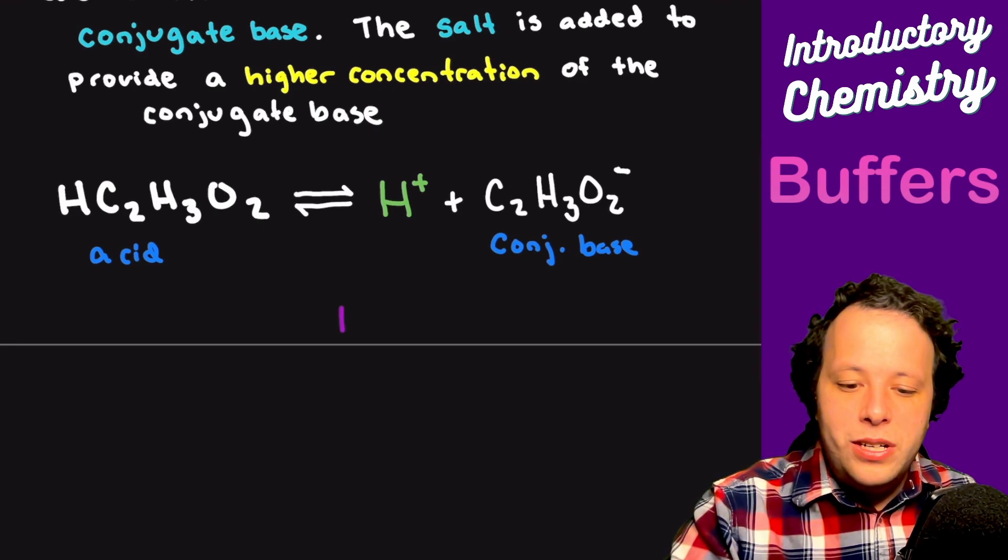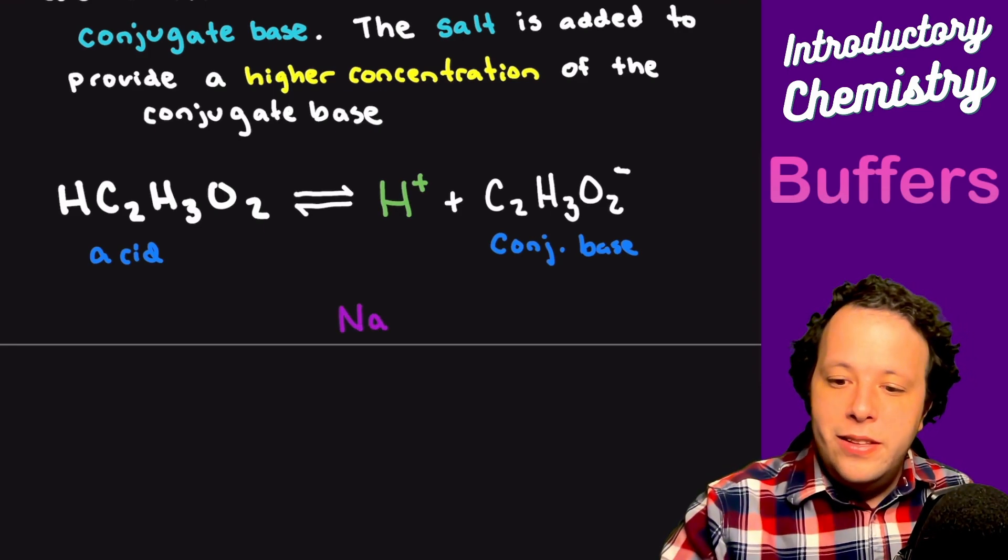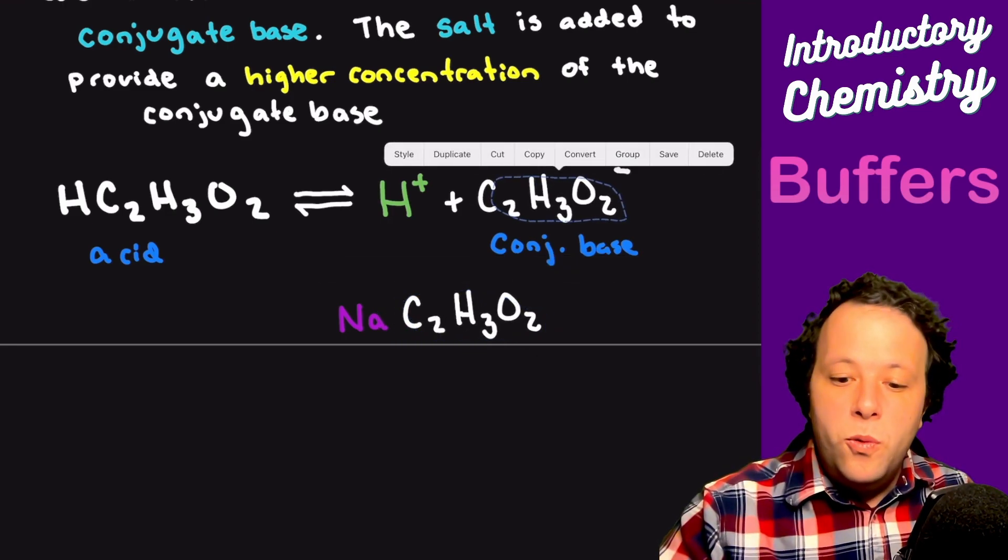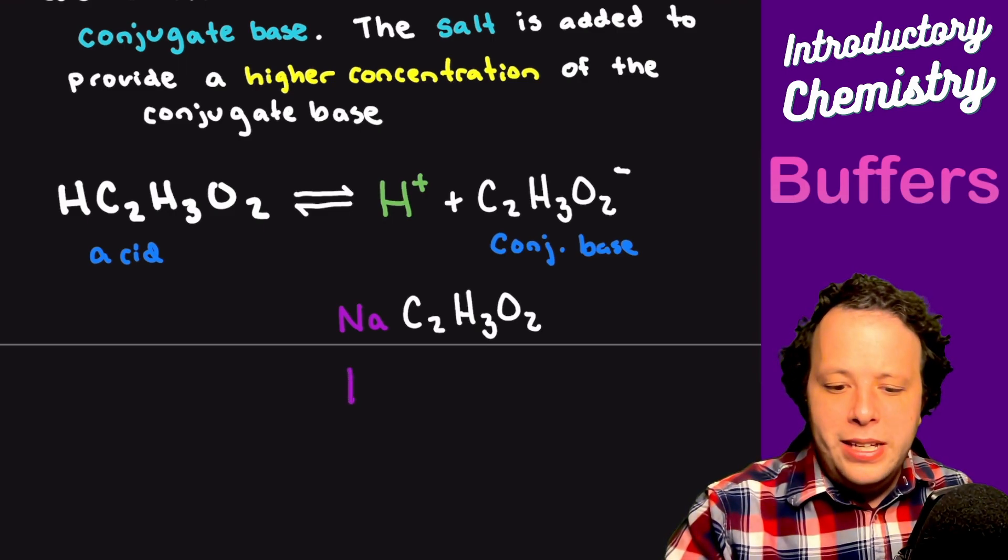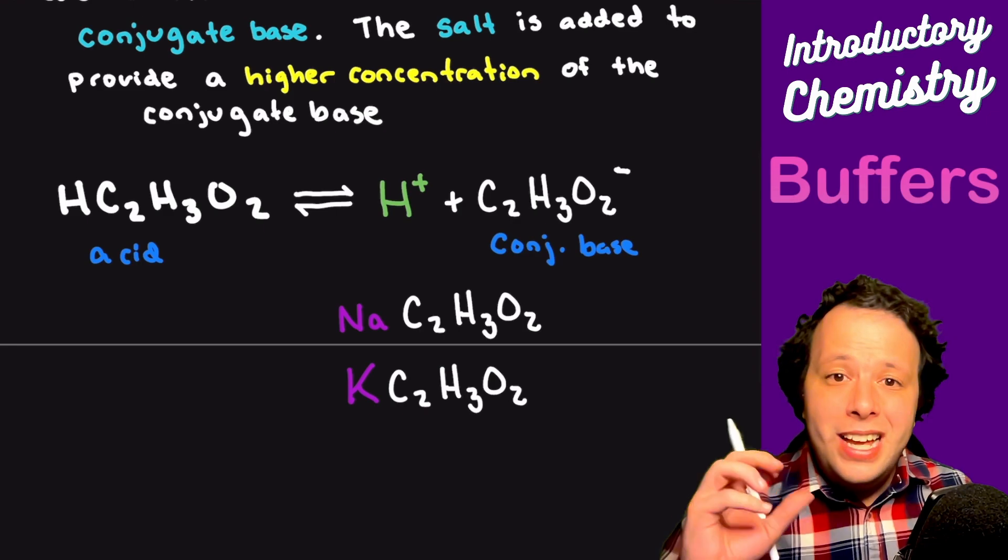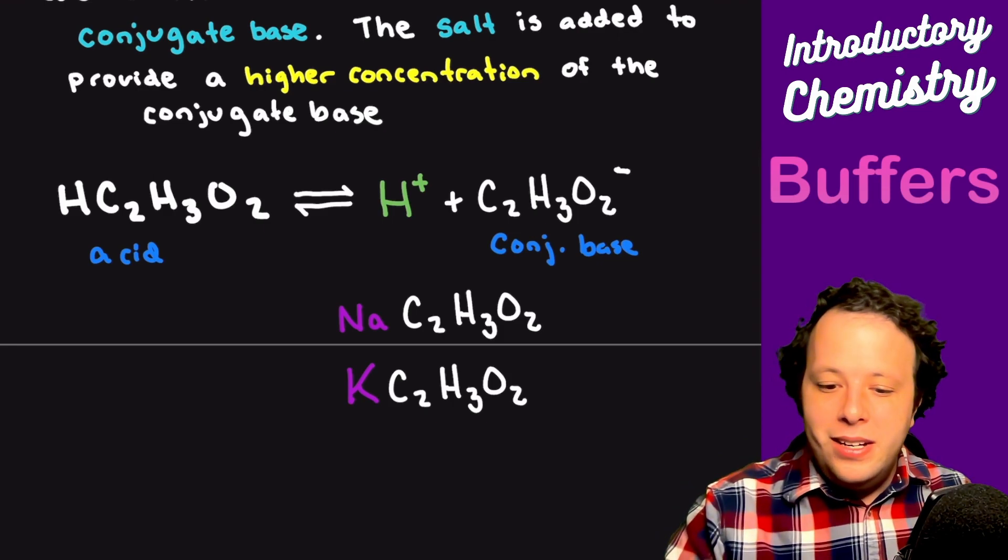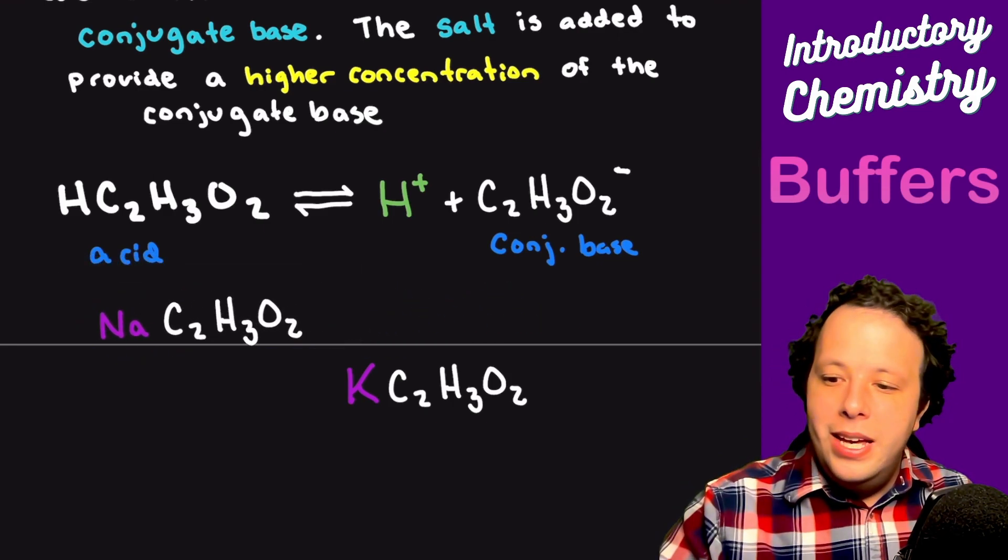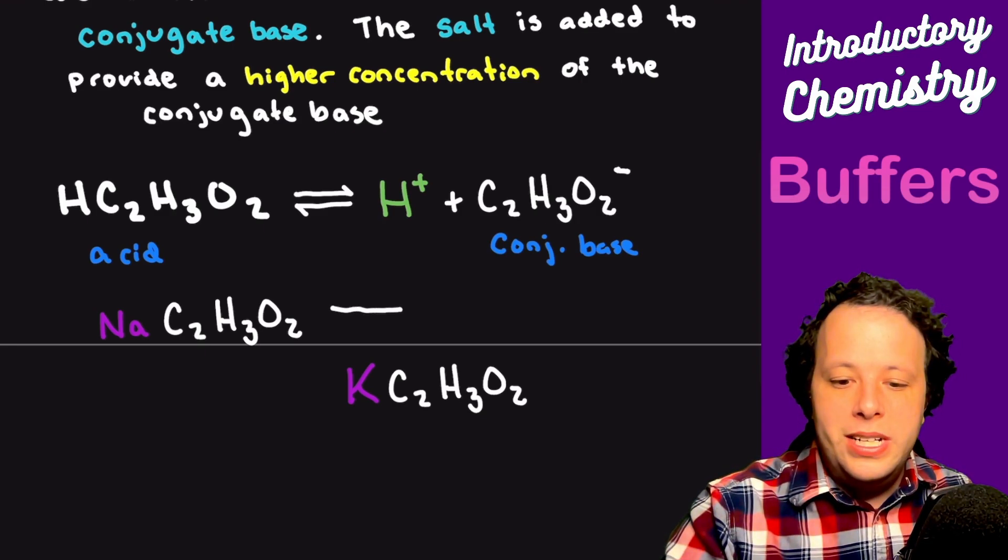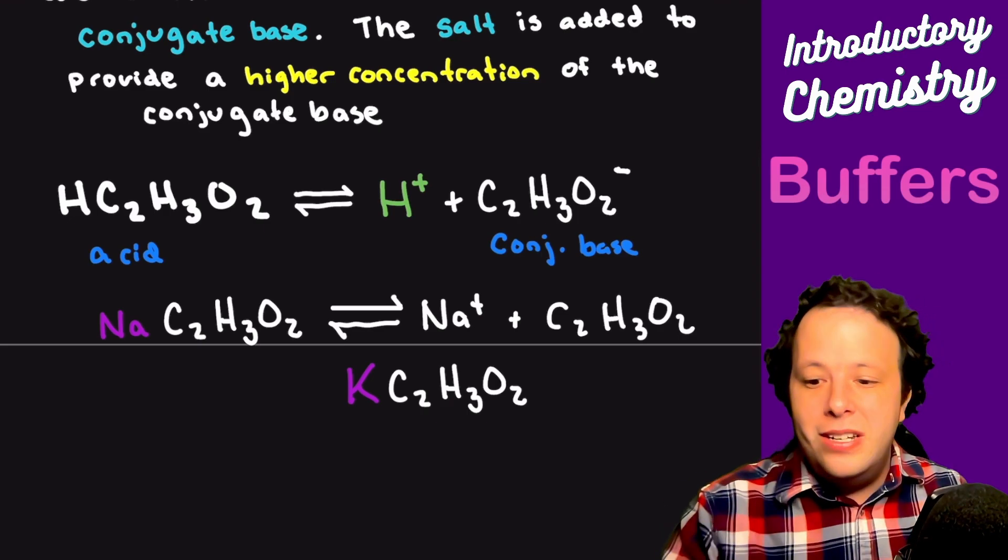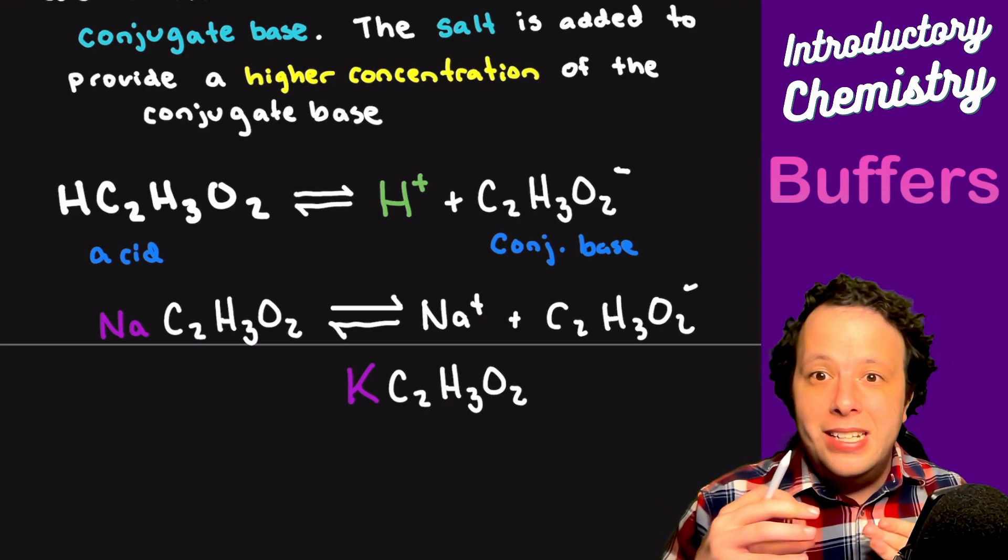If I took sodium acetate and bonded those two together, this would be one example. Another example of a salt could be potassium acetate. Essentially anything that has that salt component to help create that ion. If I take sodium acetate and throw that into solution, you'd make sodium and the acetate ion. So you need to add both of them into a solution to make that buffer. It consists of both.